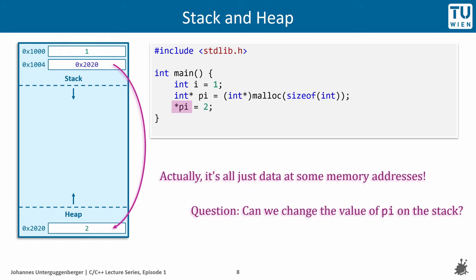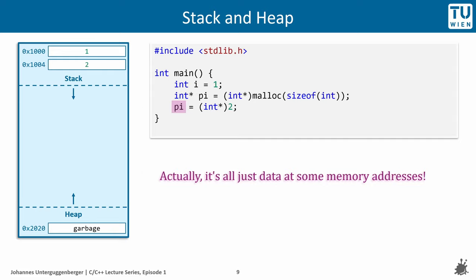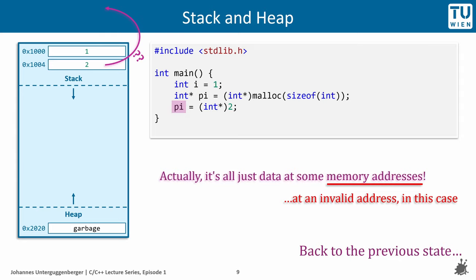It is actually also possible to change the value of that one. However, the compiler does not make it too easy for us to do that, we could not do it without an explicit cast. And the compiler has good reason to try preventing us from doing so, because what we are trying to do is to assign an invalid memory address to the variable pi. It would just point to some invalid or unknown memory address. So let's not do this. And let's return to the previous state.